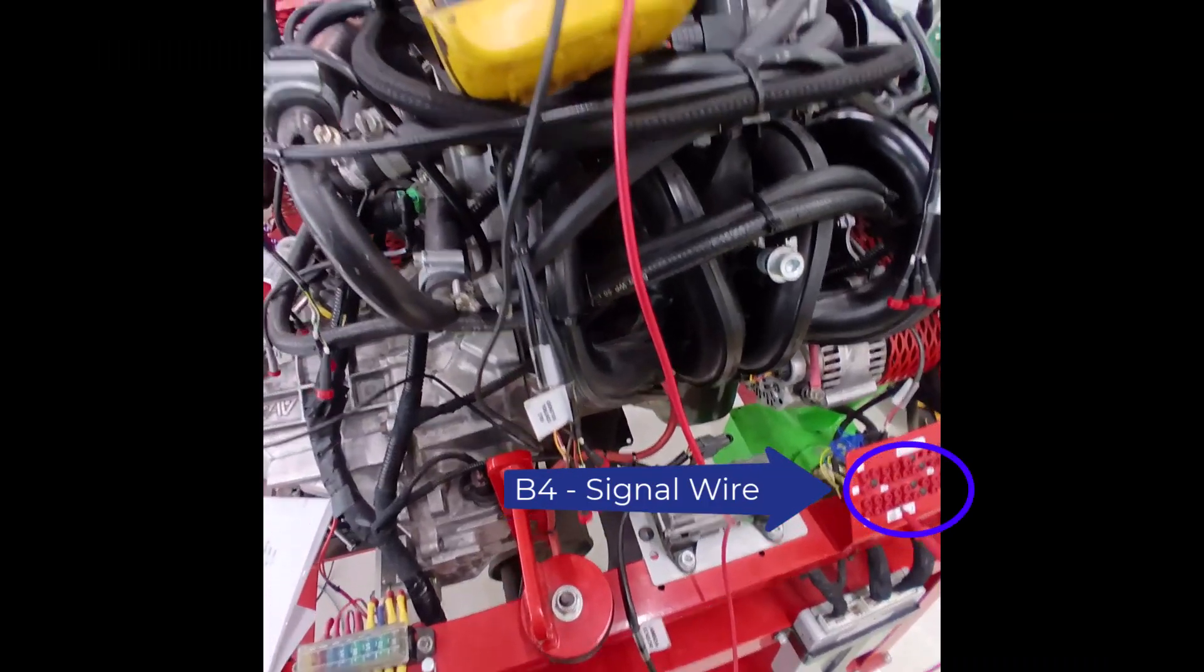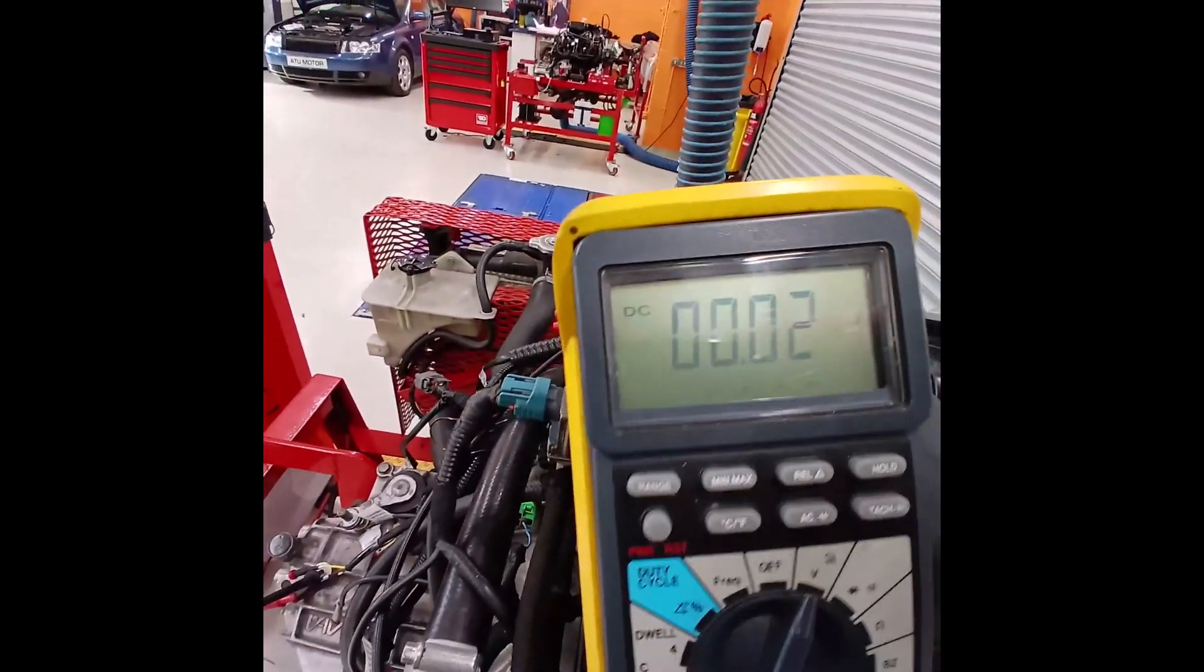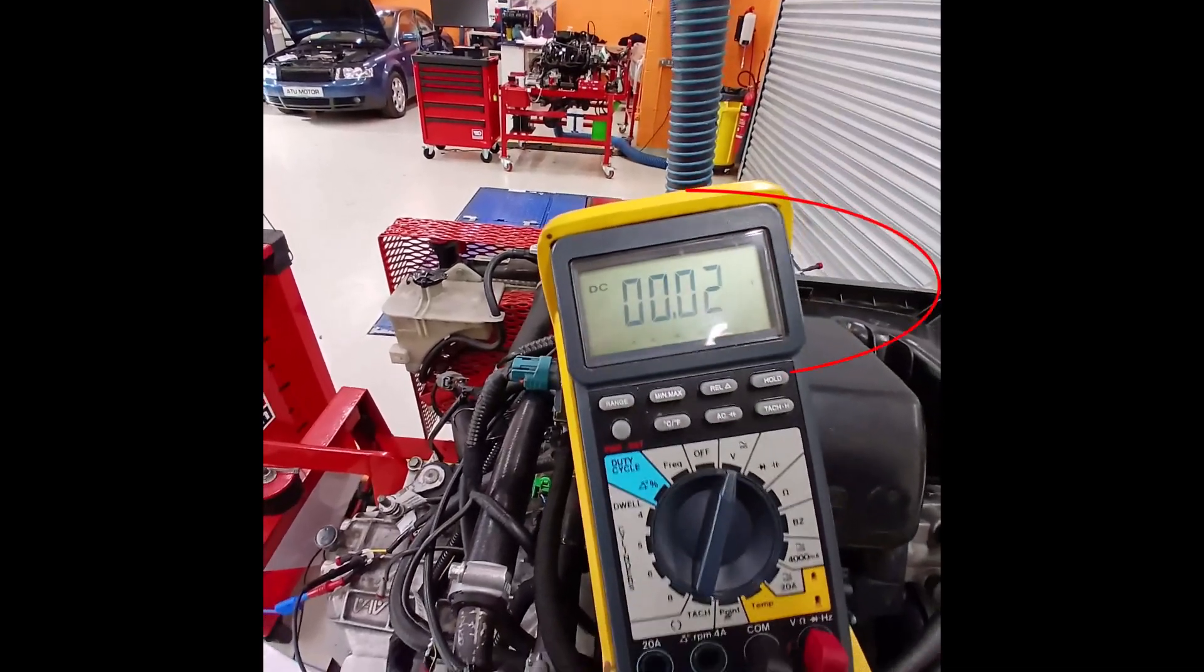Next, I just checked the voltage there on B4. It should be like 2, 3 or 4 volts, something like that, but it's stuck at zero, which does indicate that that wire is shorted to ground.